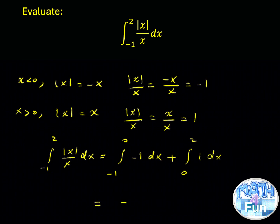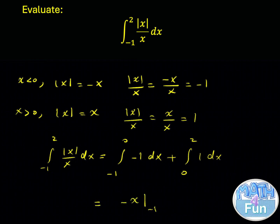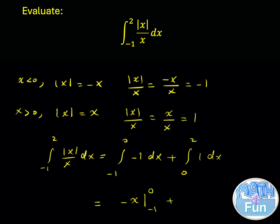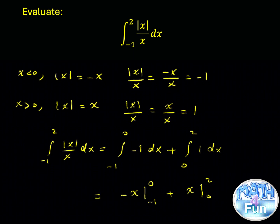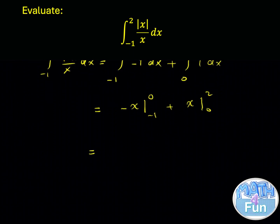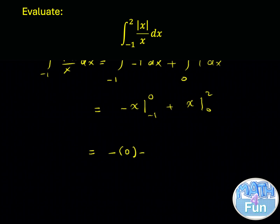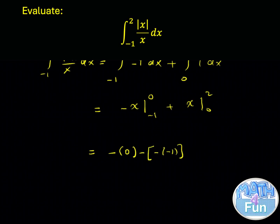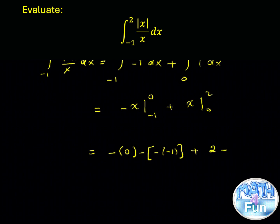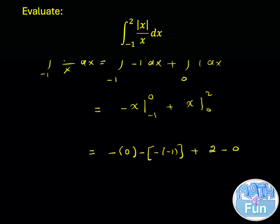The integral of minus 1 is minus x, evaluated from minus 1 to 0, plus the integral of 1 is x, evaluated from 0 to 2. This gives us minus of (0 minus (minus 1)) plus (2 minus 0).